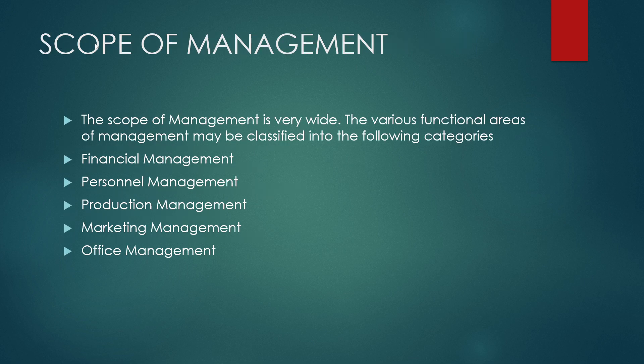Next, the scope of management is very wide. The various functional areas may be classified into the following: one is financial management, second is personnel, third is production, fourth is marketing, and the fifth one is office management.